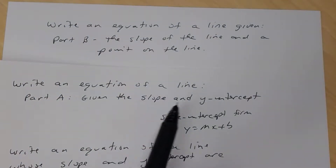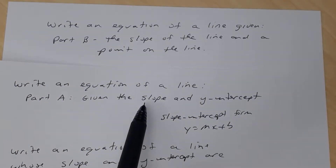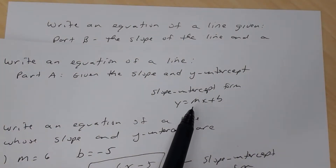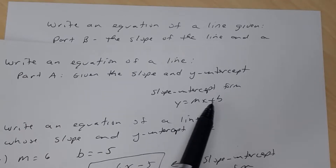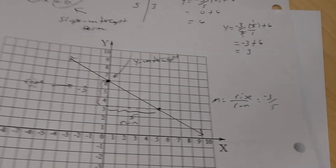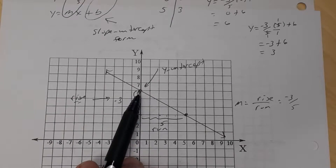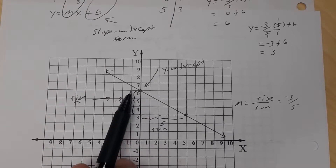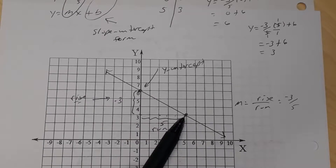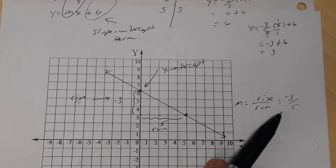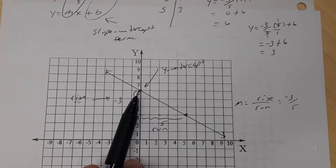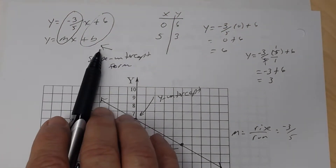The y-intercept is a point, but in Part A it was specifically the y-intercept. If the slope and y-intercept are given, you can easily use slope-intercept form because you need to know the slope and the y-intercept. If a graph is given and you can easily determine the y-intercept — in this case the graph crosses the y-axis at six — you can also determine the slope using rise over run or any two points on the line.